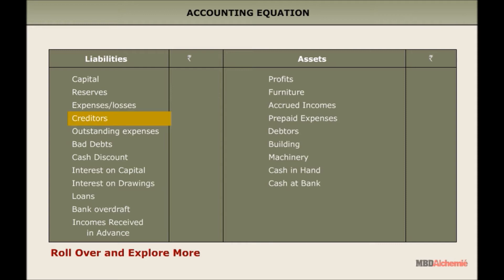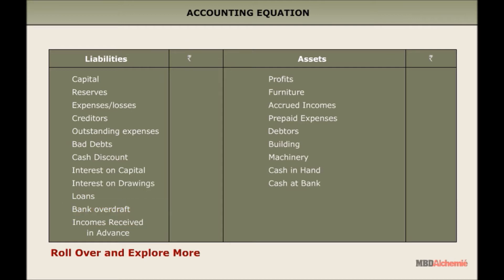Creditors are shown on the liabilities side of the balance sheet. Loans are shown on the liabilities side of the balance sheet. Bank overdraft is shown on the liabilities side of the balance sheet. Profits are shown on the asset side of the balance sheet.